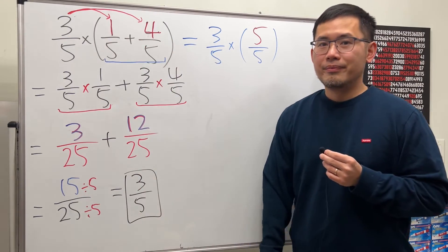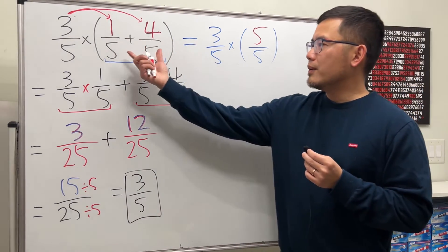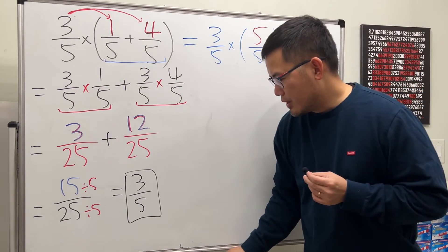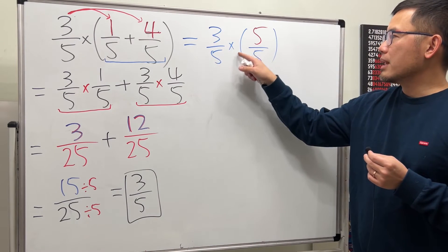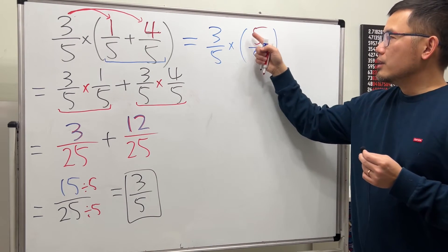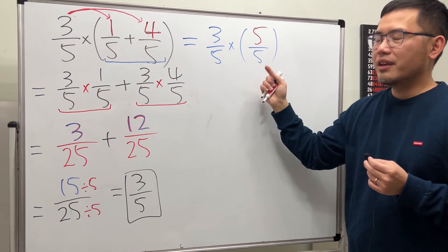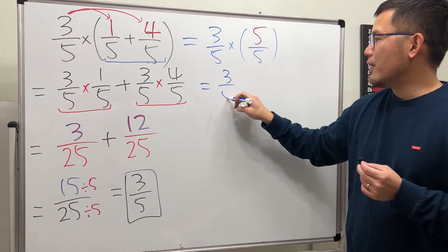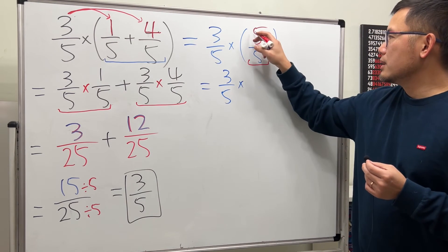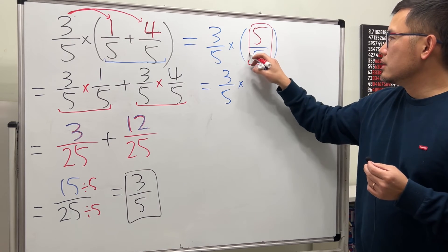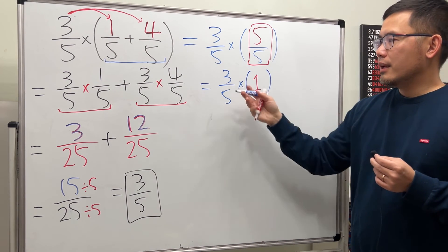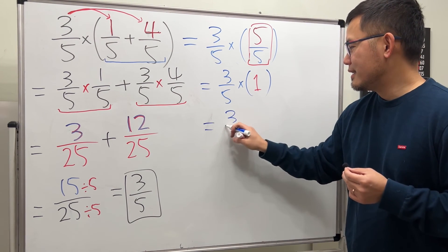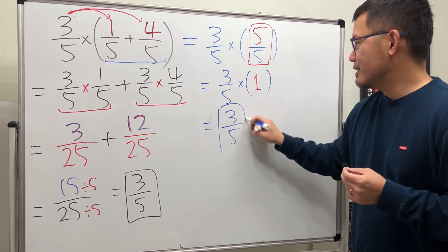If you distribute, then you do it like this. However, if you just added inside first, you get that. And as you can see, right here, 3 over 5 times 5 over 5. Look at the inside. Can we do anything with this? Sure thing. 5 over 5 is just 1. So, we will get 3 over 5 times, again, this part, this portion here, is just equal to 1. And then, 3 over 5 times 1 is just 3 over 5. And then, we are done. Just like that.